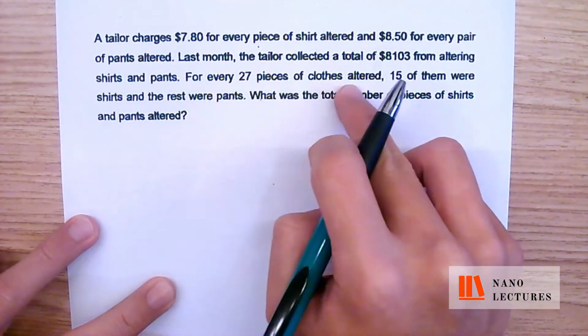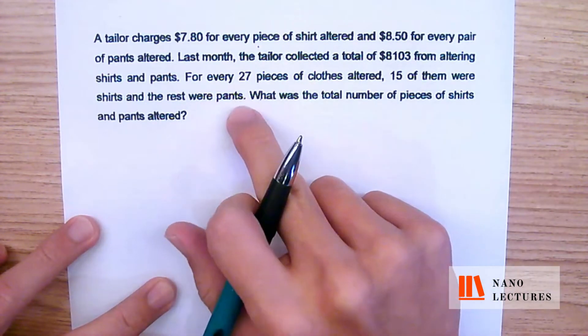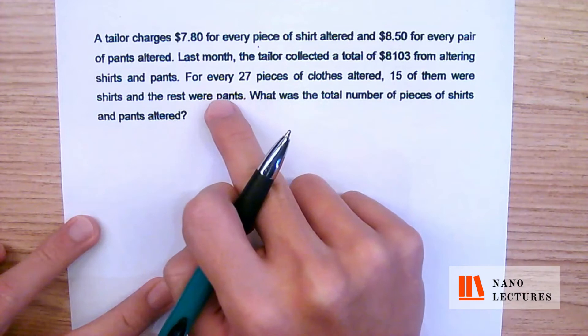For every 27 pieces of clothes, 15 of them were shirts and the rest were pants. So how many were pants? 27 minus 15—that will give you the number of pants.